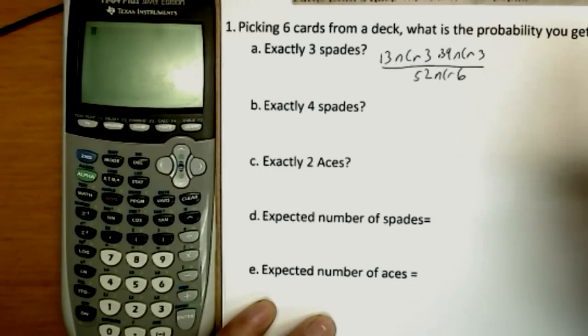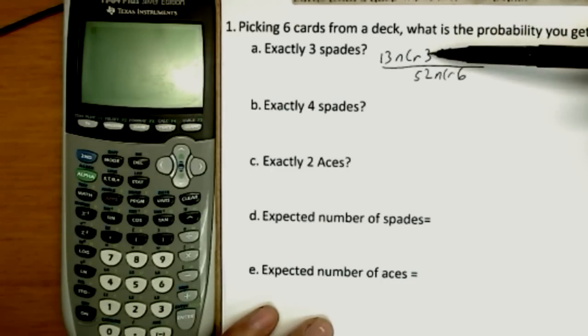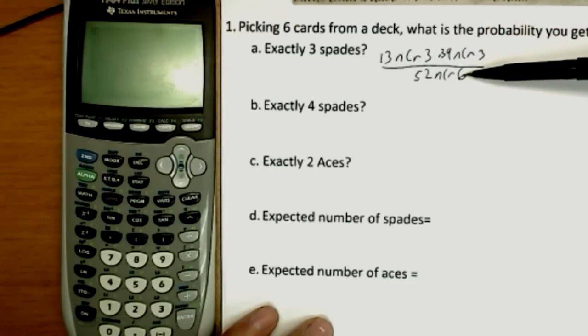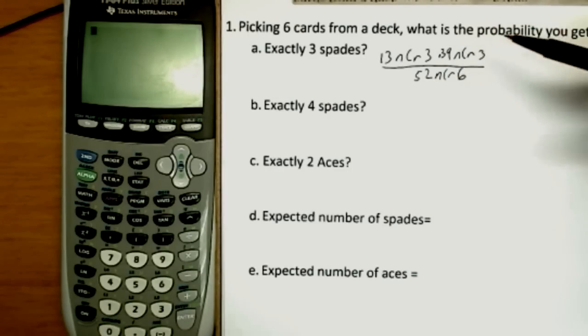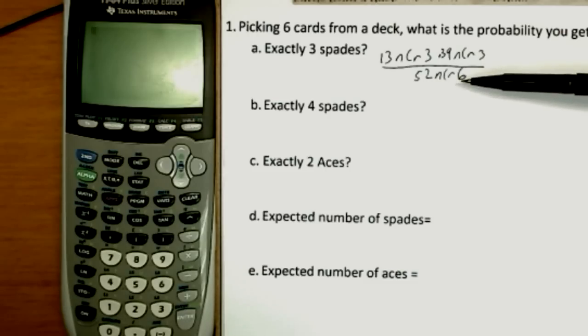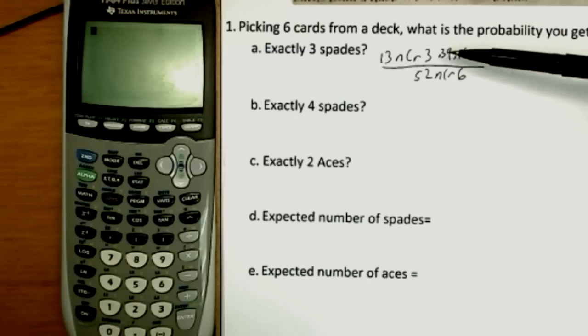And then the total on the bottom would be 52 NCR6. And we're going to note the symmetries once again. Three cards here, three cards here adds up to our total of six. 13 plus 39 is 52. And what we're doing is using our basic law of probability. We're counting all the possible six card hands here. Six cards chosen with no concern about order, so we use NCR rather than NPR. Six cards chosen out of 52 is all the possible six card hands on the bottom. And on top, we're counting the number of ways of getting six card hands where three are from the spades, three are from the other cards.